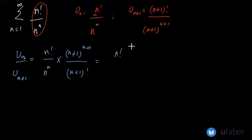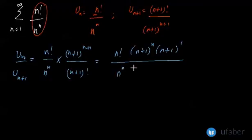You would get n factorial times (n+1) to the power n times (n+1) to the power 1, that is simple exponential law, divided by n to the power n times (n+1) times n factorial. Now n factorial and n factorial gone, (n+1) and (n+1) gone, so after manipulation you are left with (n+1) by n to the power n.